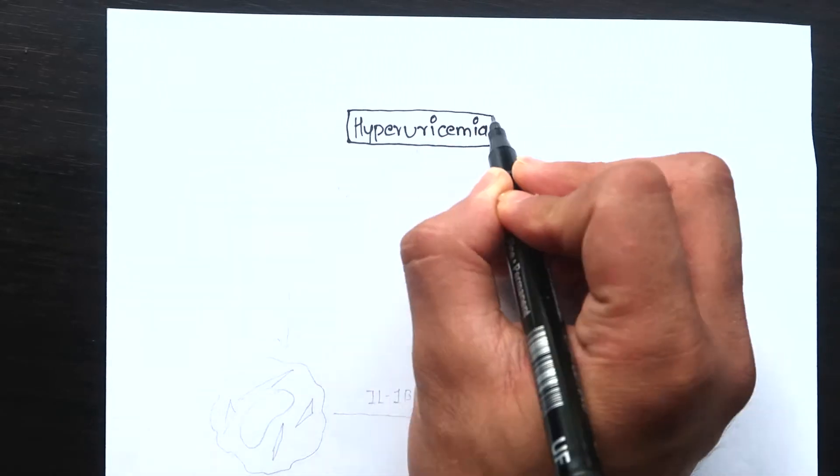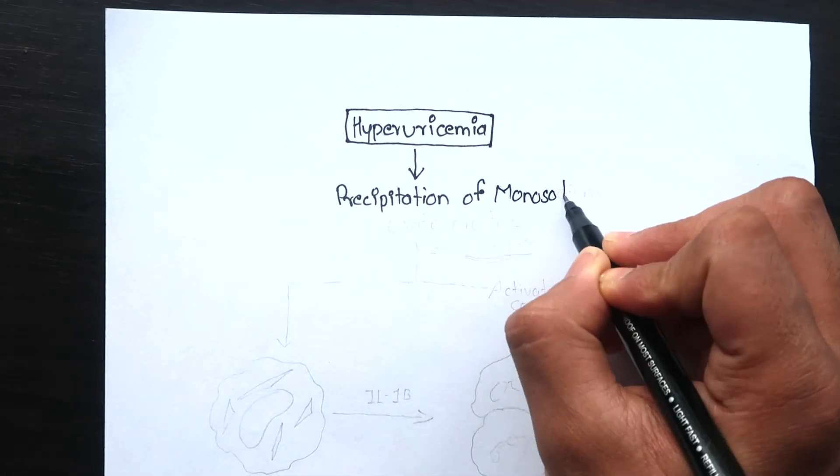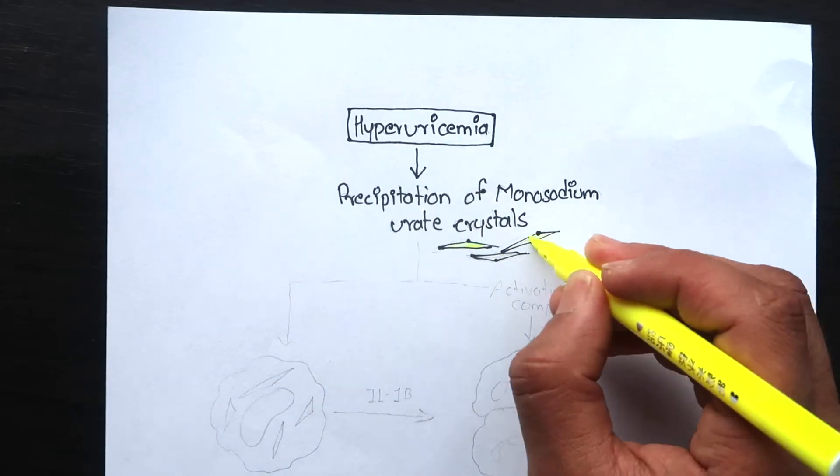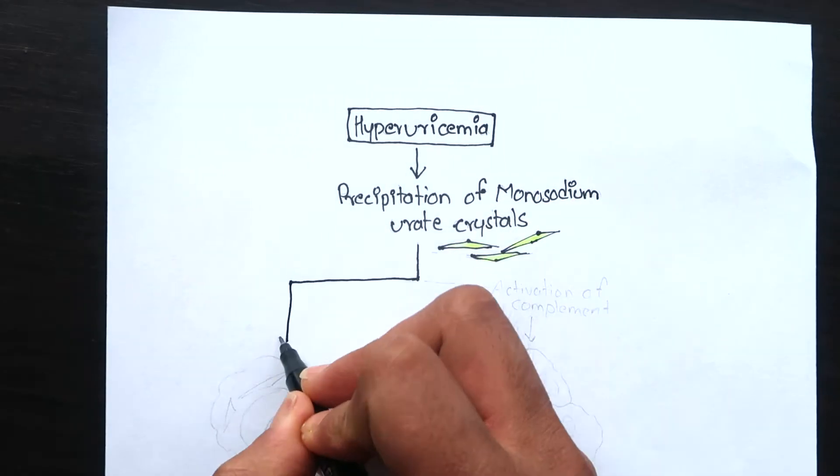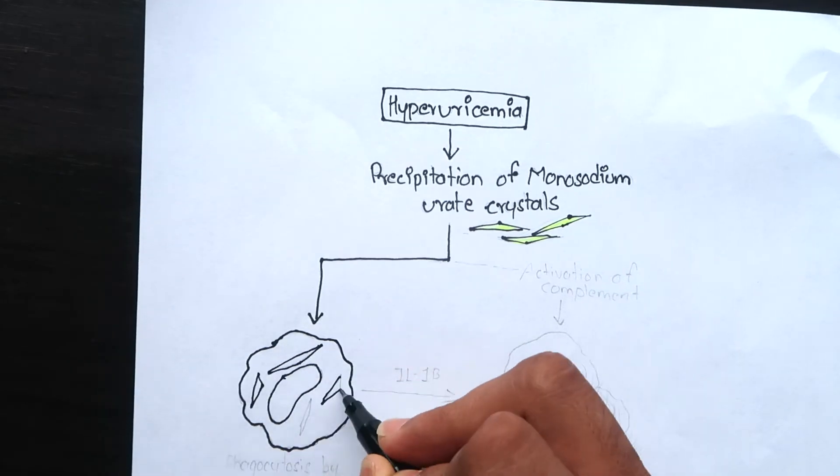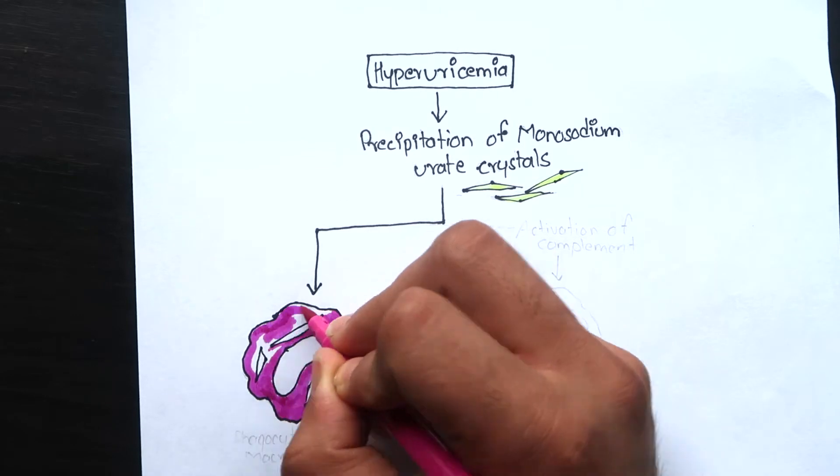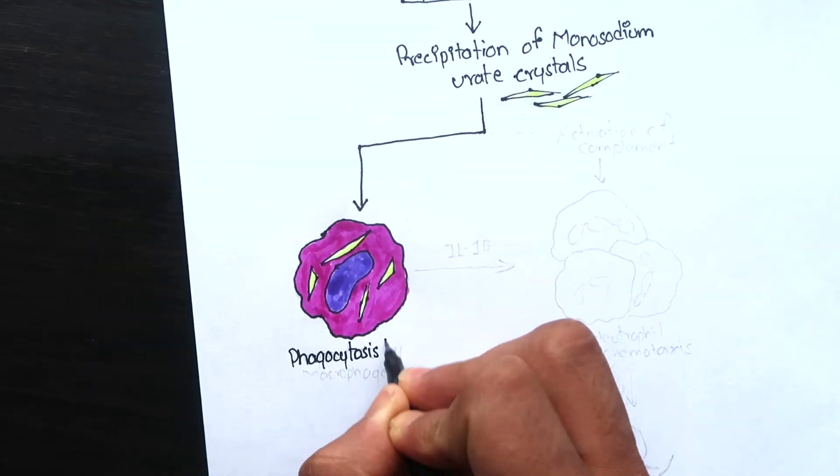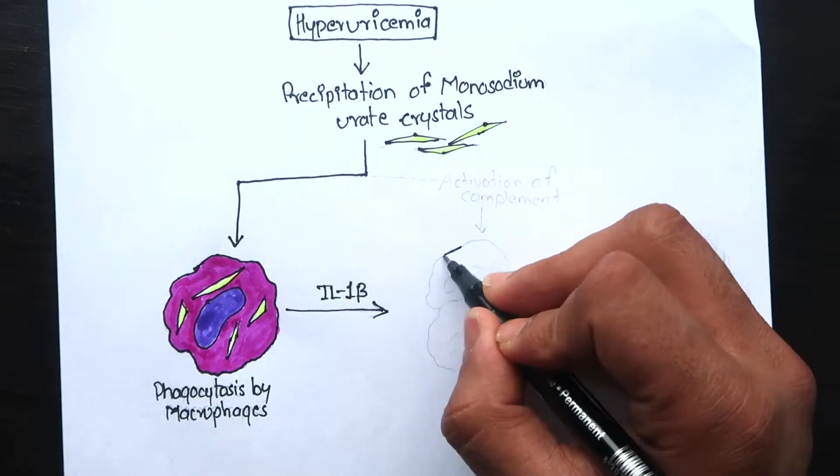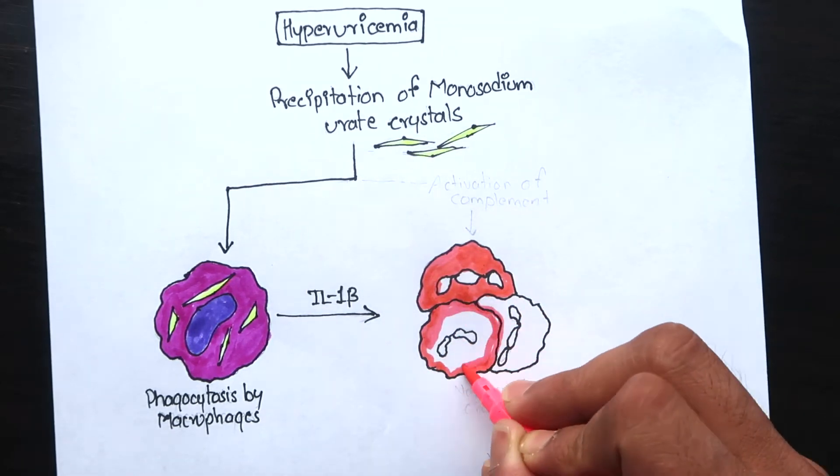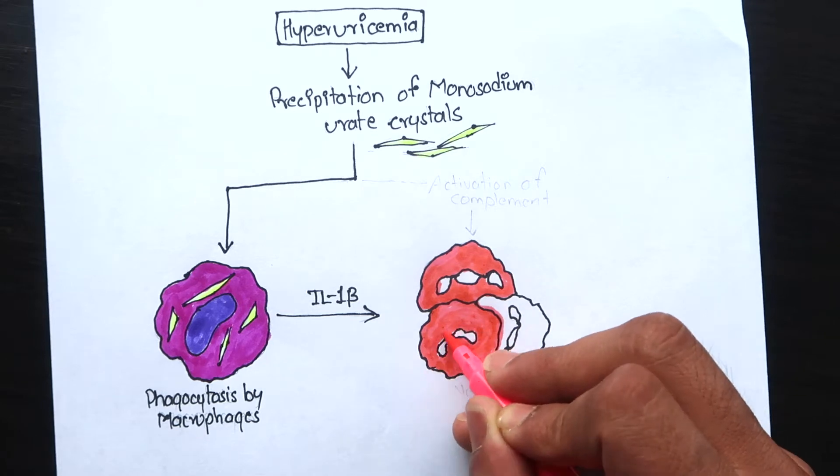Now let's look at the pathogenesis of acute gouty arthritis. Hyperuricemia leads to precipitation of uric crystals in joints. These crystals are phagocytosed by the macrophages of the joints. The macrophages then produce interleukin-1 beta that recruits more inflammatory cells, predominantly neutrophils.